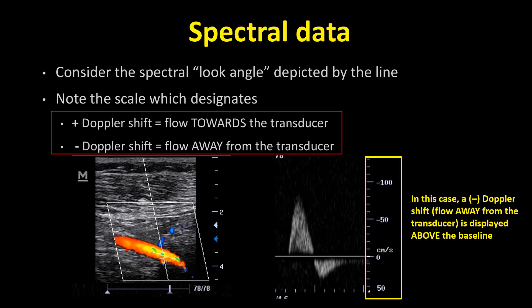When considering spectral data, that spectral look angle is already depicted by the spectral cursor line. If it helps, feel free to picture that imaginary reference line 90 degrees to that look angle. However, we also need to consider how that spectral sample point interacts with the vessel. We must also consider the spectral display and the scale along the side — the numbers listed there have a positive or negative designation. A positive Doppler shift equals flow towards the transducer; a negative Doppler shift equals flow away from the transducer. In this case, the negative Doppler shift — or flow away from the transducer — is displayed above the baseline.